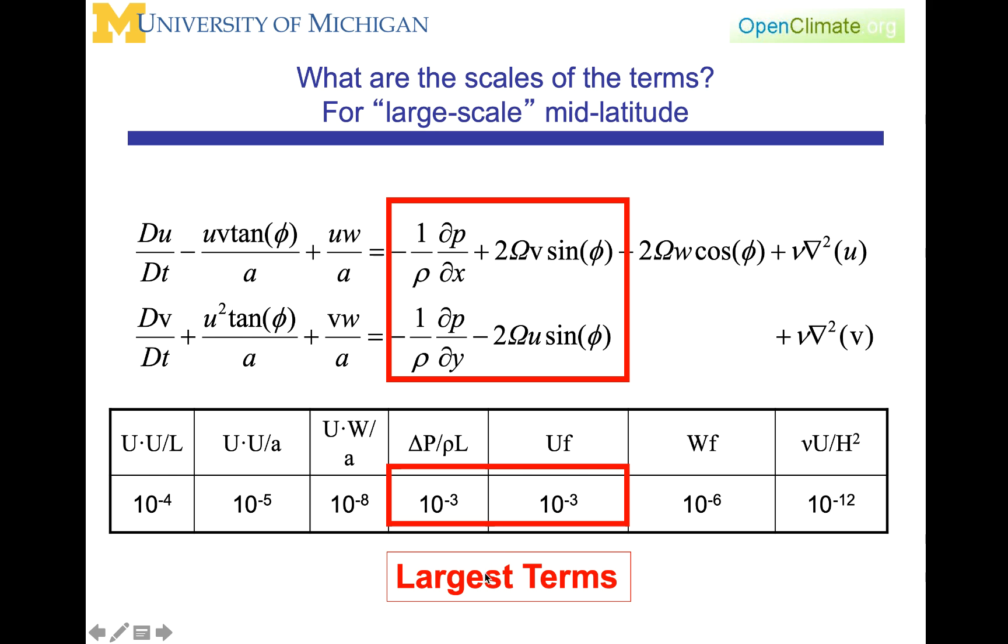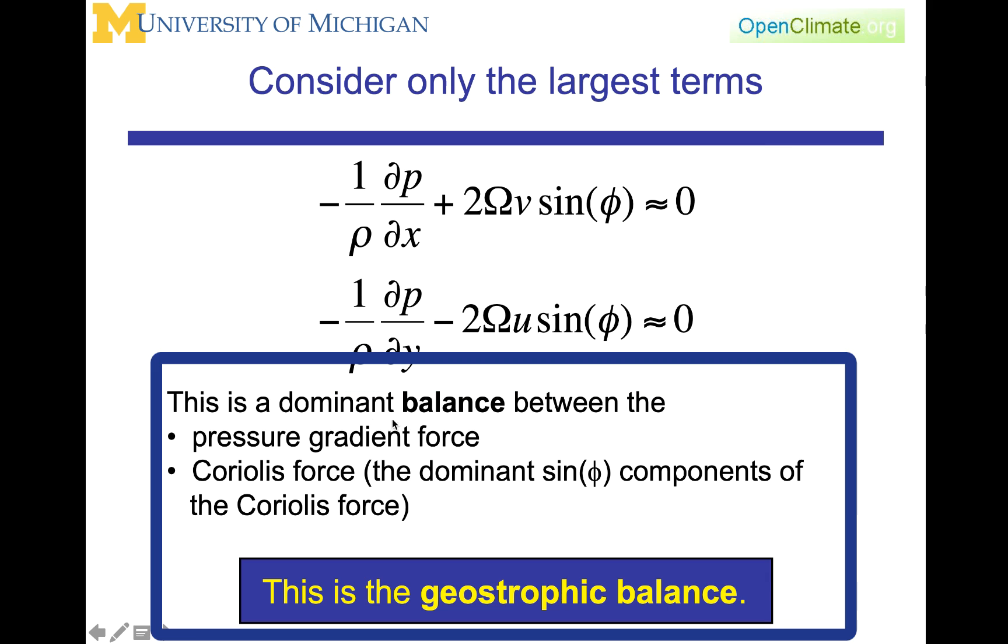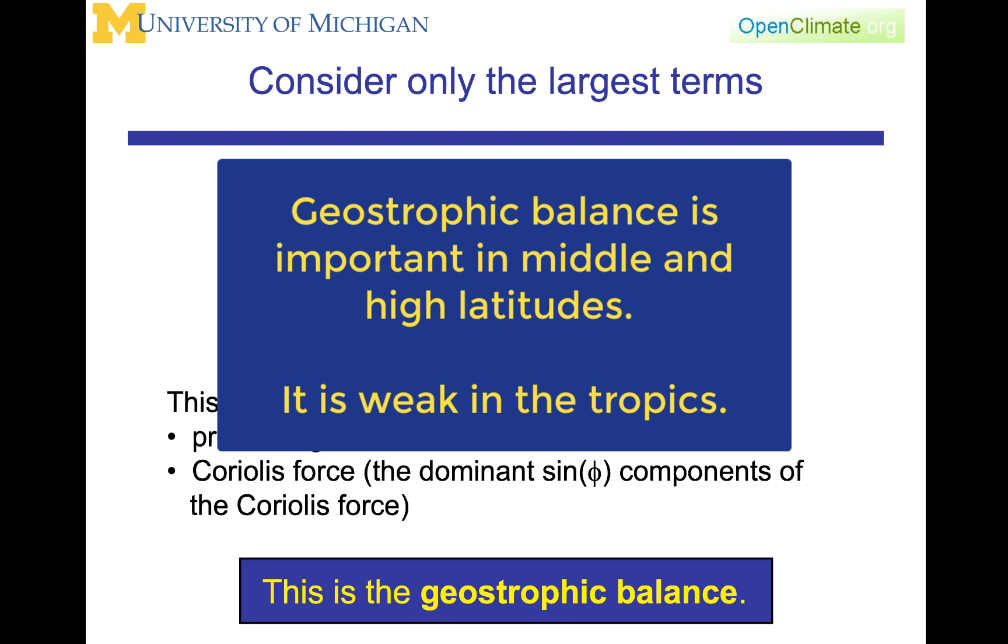That is shown in this slide here, where I have put the red square around the largest terms in the equation. If we just take those terms and recopy them here, considering here only the largest terms, then we have the two pressure gradient terms, the two Coriolis terms are approximately balanced, and this is the dominant balance between pressure gradient force and the Coriolis term, and this is the geostrophic balance. The geostrophic balance is one of a number of balances that we will see is important in defining really what we might call the background flow or the general nature of flow within the atmosphere.